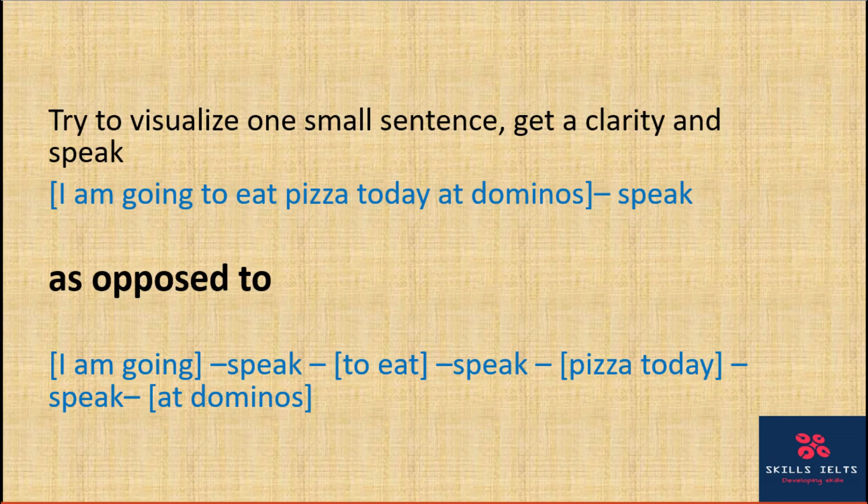All the clarity he has is that he wants to go somewhere, so he starts speaking: 'I want to go...' then he starts thinking, 'I want to go to eat pizza at Domino's.' Instead, calm yourself, think it through. It's okay in the beginning if it takes time — things will happen on their own, you can't force them immediately. Stop and calm down: 'I want to go to that particular place, eat pizza at Domino's.' Once you have complete clarity, start speaking. Have clarity of one full small sentence rather than small fragments.